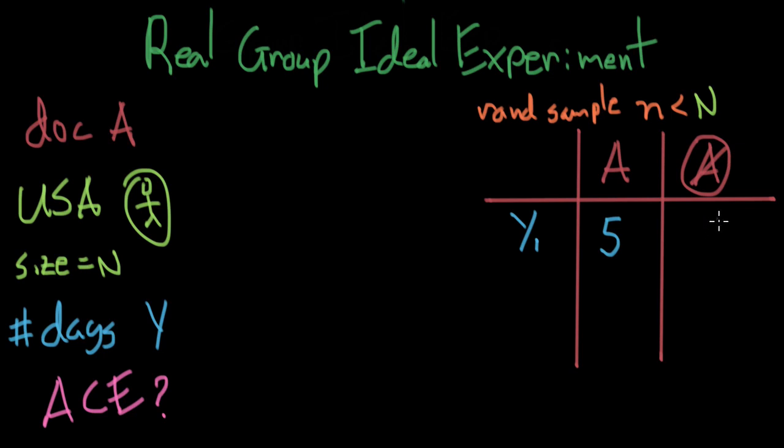But we don't necessarily see, because of the fundamental problem of causal inference, we don't necessarily see what would have happened if they didn't see a doctor. Y sub 2, this person didn't see a doctor. We said, hey, you cannot see a doctor. We forced them not to see a doctor, and they were sick for seven days.